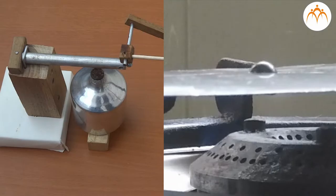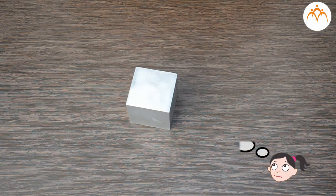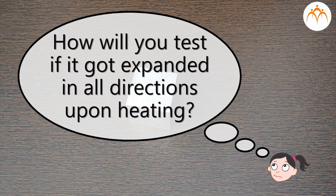We saw how rod and plate expand in one and two dimensions. If I take a cube of aluminum, how will you test if it got expanded in all directions upon heating?